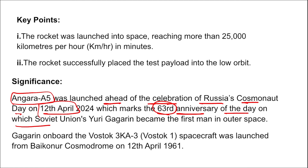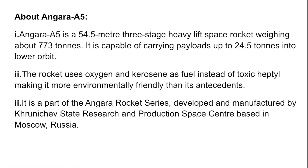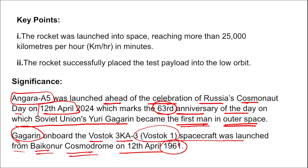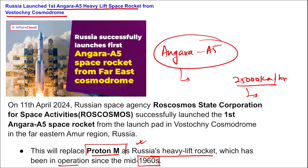Yuri Gagarin, onboard the Vostok 3KA (Vostok 1) spacecraft, was launched from Baikonur Cosmodrome on 12th April 1961. The Angara A5 is a 54.5 meter, three-stage heavy-lift space rocket weighing about 773 tons. It is capable of carrying payload up to 24.5 tons into space. The rocket uses oxygen and kerosene as fuel instead of toxic hypergolic propellants, making it more environmentally friendly than its predecessors. Russia conceptualized the Angara project in 1991 after the breakup of the Soviet Union. The Director General of Roscosmos is Yuri Ivanovich and headquarters are in Moscow, Russia.